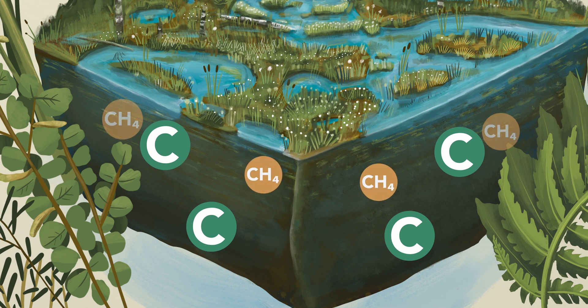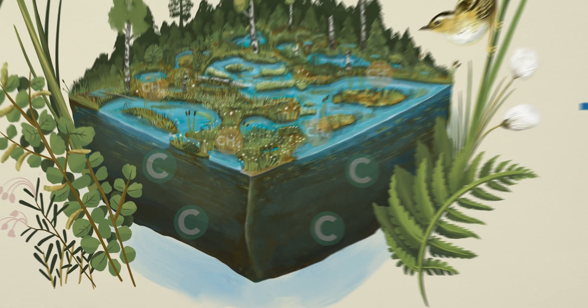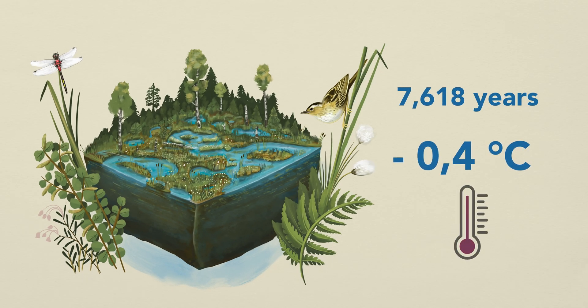Although they emit methane, growing mires worldwide are an efficient sink for carbon dioxide and have cooled the global temperature in the last 10,000 years by 0.6 degrees Celsius.